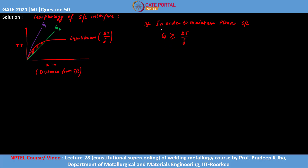The condition for a planar solid-liquid interface is: G must be greater than or equal to ΔT divided by δ, where δ is the thickness of the solute-rich boundary layer equal to D_L/R. Substituting and simplifying, the condition becomes G/R ≥ ΔT/D_L. If G/R is less than this value, the planar solid-liquid interface will not be sustained and will break into cellular or dendritic morphologies.